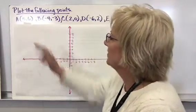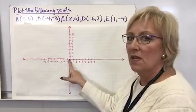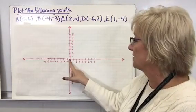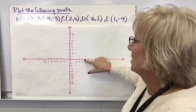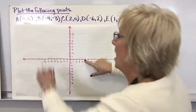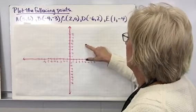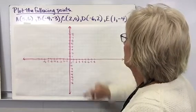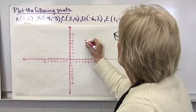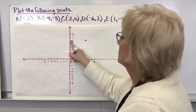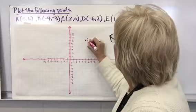Alright, if we're going to plot the point (5, 6) — remember I start at the origin. X is my first number so I go to five on the x-axis, then my y goes up six units in a positive direction. So this point, which I'll label A, falls at (5, 6).